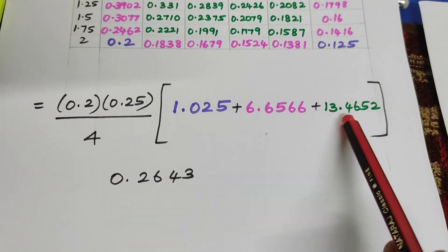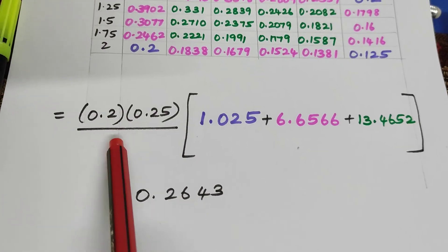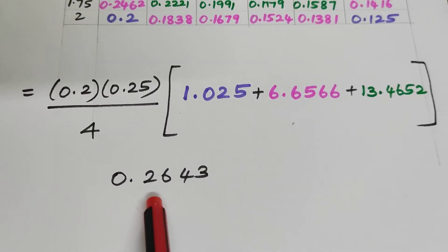All those 12 values added together will result in 13.4652 which I have used the same color. Finally adding up all these 3 and multiplying and division, this is the final answer for you.